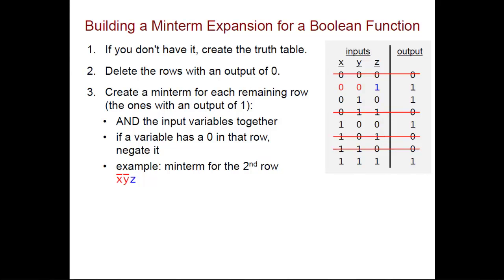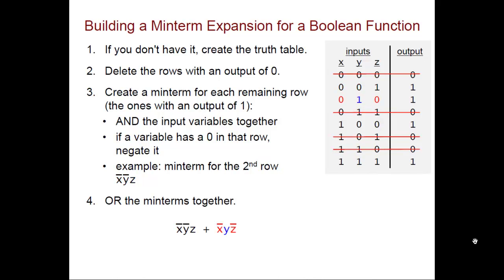Then you want to keep doing that, and you OR the min-terms together. So for this truth table, we have the one that we already created. Then we have one for the third row, and notice that we're negating the x and the z because the inputs are 0 for those variables, but we don't negate the y. Then for the fifth row, we have this min-term. The x is a 1, so it's not negated. The y and the z are both 0, so they are negated. And then the last row, all of the inputs are 1, so nothing is negated. So we end up with four min-terms, one for each row in which the output is 1. We OR them together, and that gives us the full min-term expansion of this Boolean function.